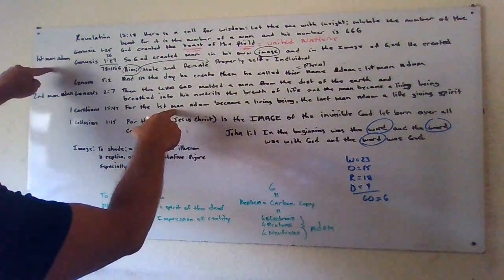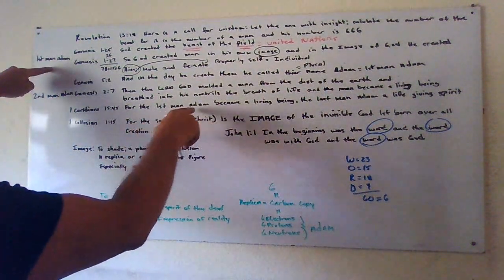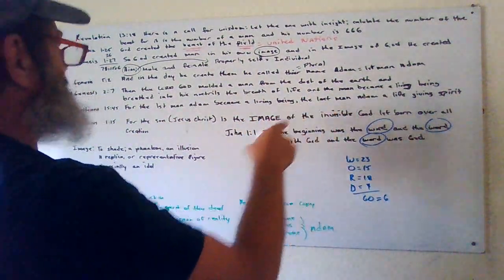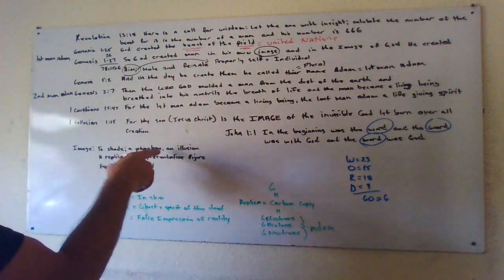For the first man, Adam, up here, Genesis 1:26, Adam became a living being, which is a lie because it's created in an image. And an image of God is to shade a phantom.